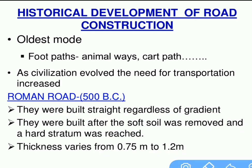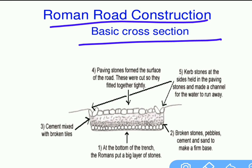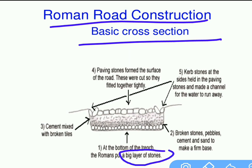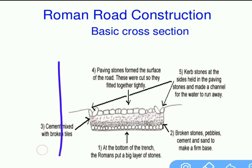First they removed the loose, soft soil to reach the hard stratum — the hard layer — and on that layer they constructed the road. Look at this figure of Roman road construction. They made a trench, then placed a big layer of stones, next broken stones (small stones), and then stones again on top. That is the Roman road construction style.